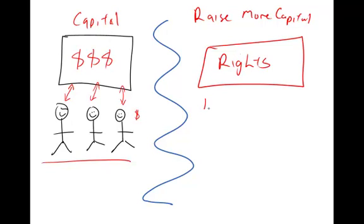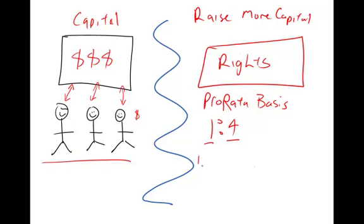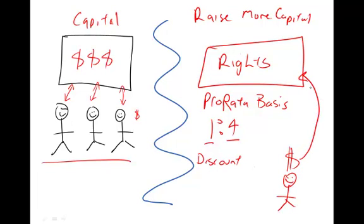A rights issue involves shares offered on a pro rata basis to existing shareholders. Pro rata means in a ratio — for example, one to four, so for every four shares you own you are entitled to one new share at a discount. Shareholders pay dollars for these rights issue shares, that money goes into the company, the company gets its capital, and shareholders get extra shares.